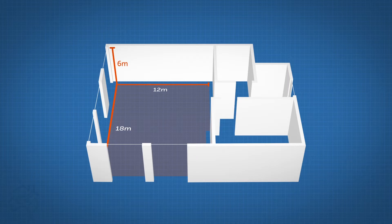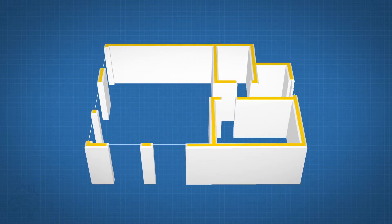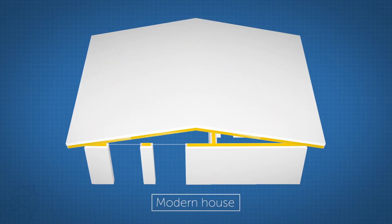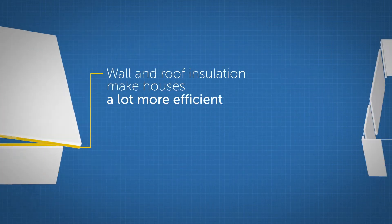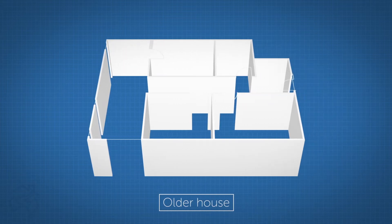The level of insulation in your house will greatly affect the heating requirements. Most modern houses have wall and roof insulation making them a lot more efficient. However, older style houses can be less insulated, causing heat to leak from the house.